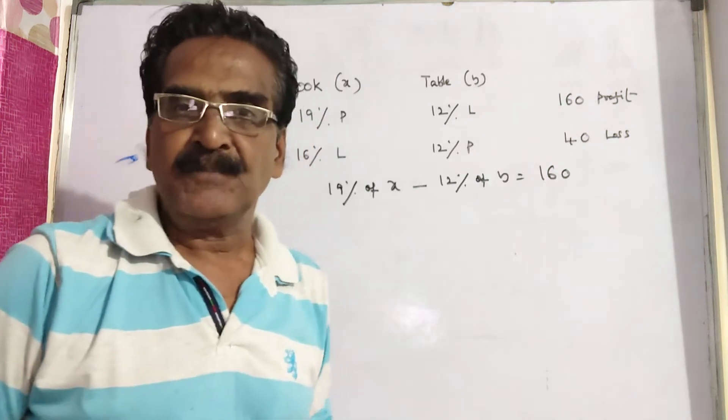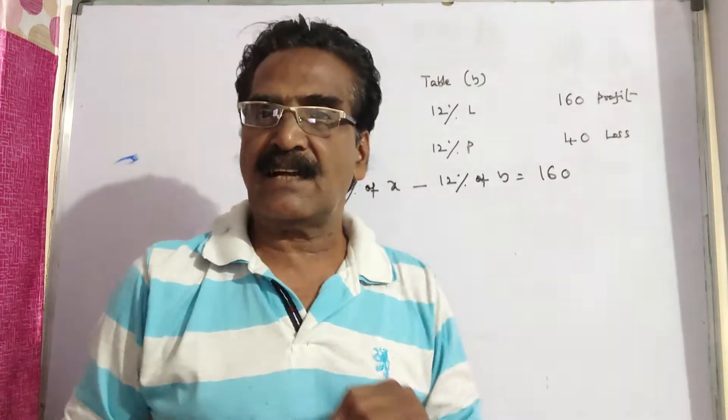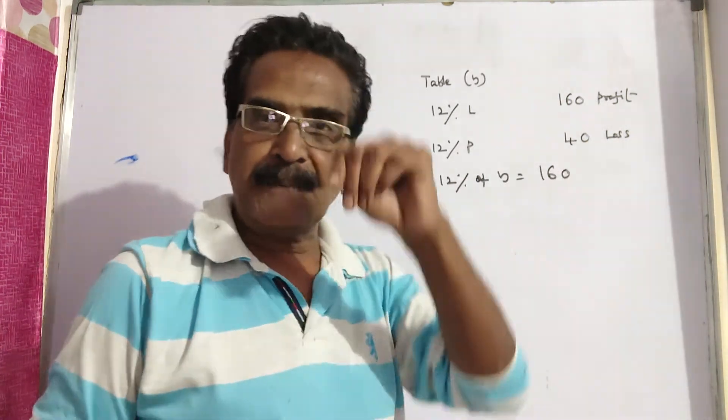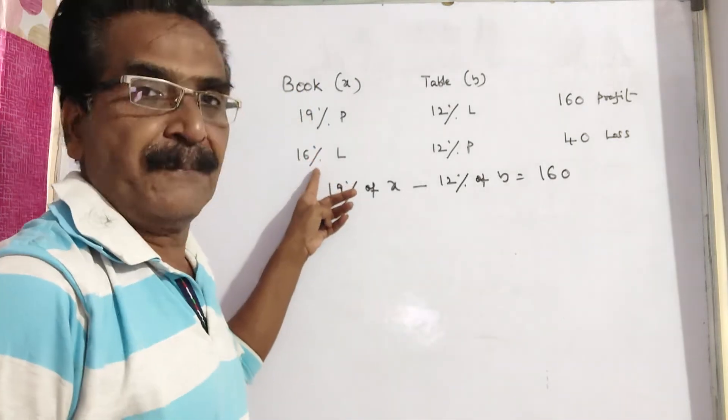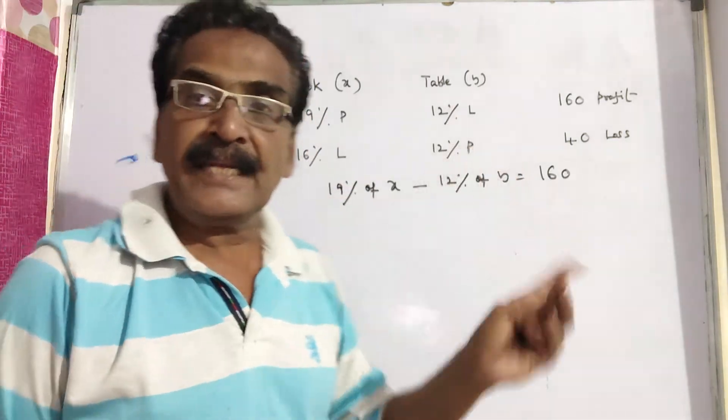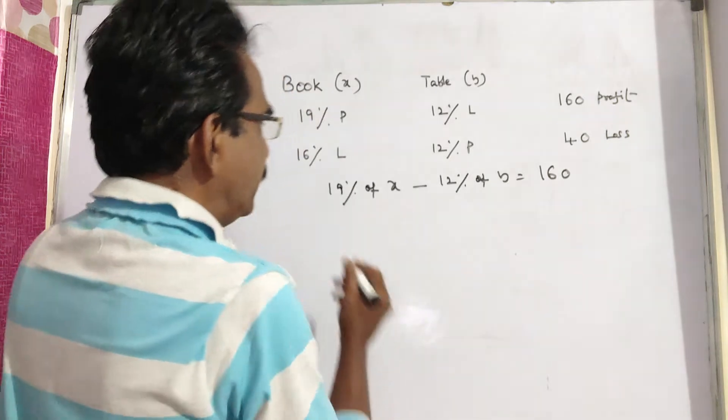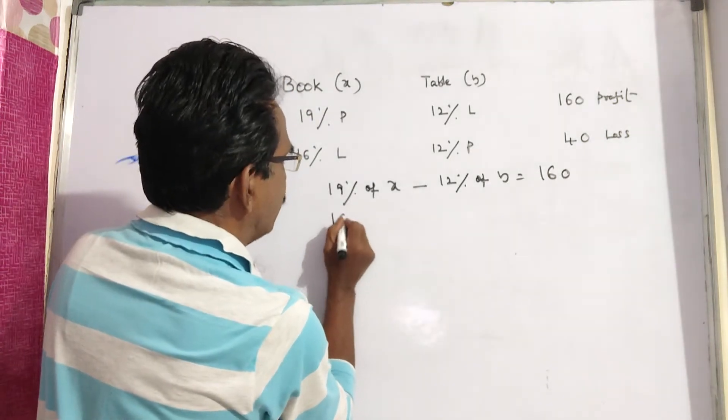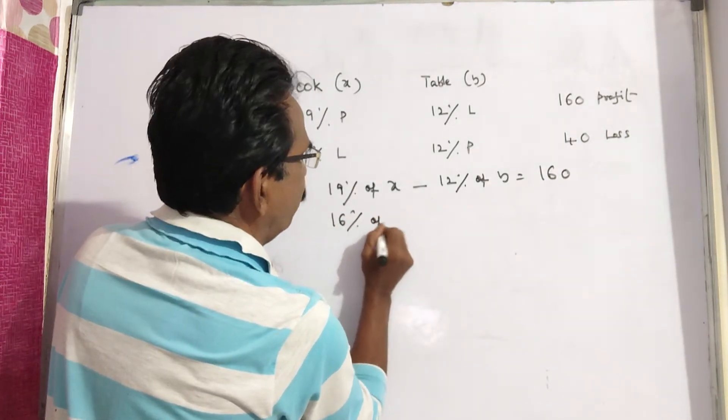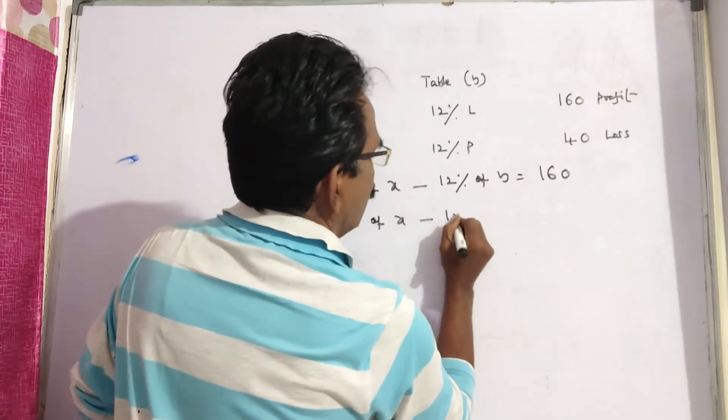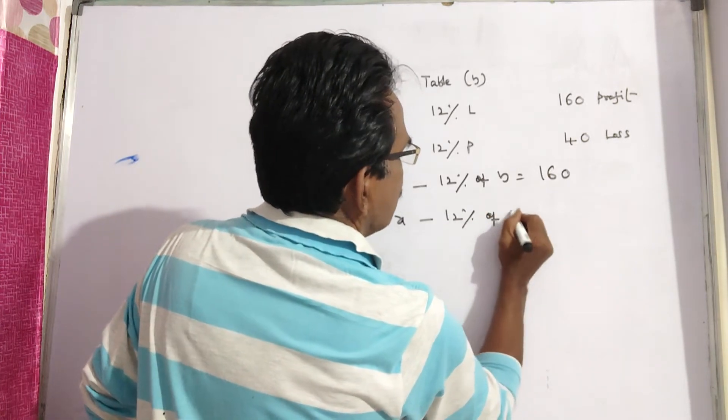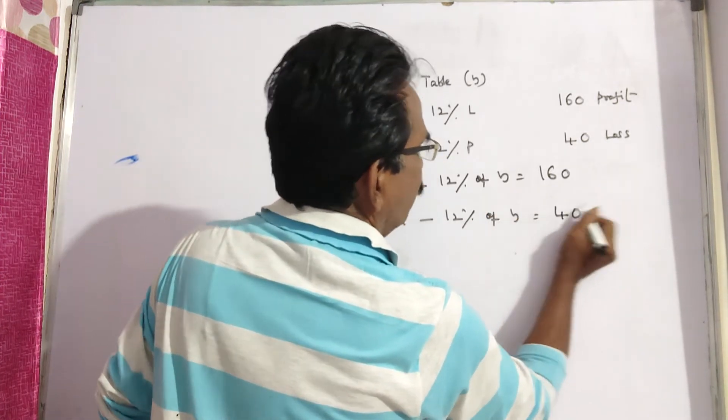This is case 1. In the second case, he suffers a loss of Rs. 40. That means the loss on the book is more than the profit on the table. It implies the second equation goes like this: 16% of X minus 12% of Y is equal to net loss of 40.